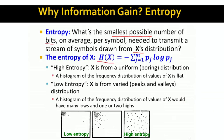We say the entropy of a given distribution x is simply a minus summation over all the possible values this distribution takes, times the probability of it taking the j-th value, times log the probability of taking the j-th value.